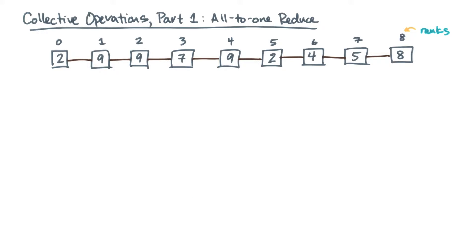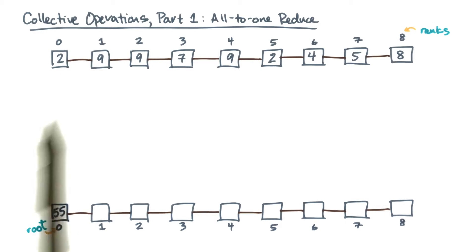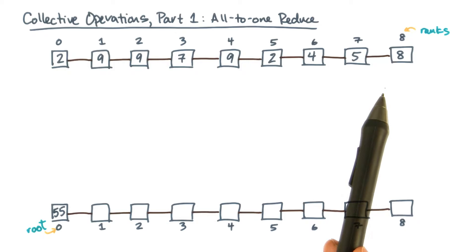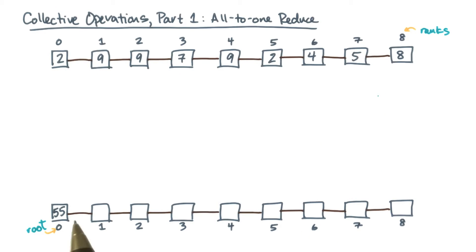In an all-to-one reduction, you want to produce a final result, which is the reduction — in this case the sum of all the values — on a root node. The sum of these values turns out to be 55, and let's say we want that result to appear on node 0.